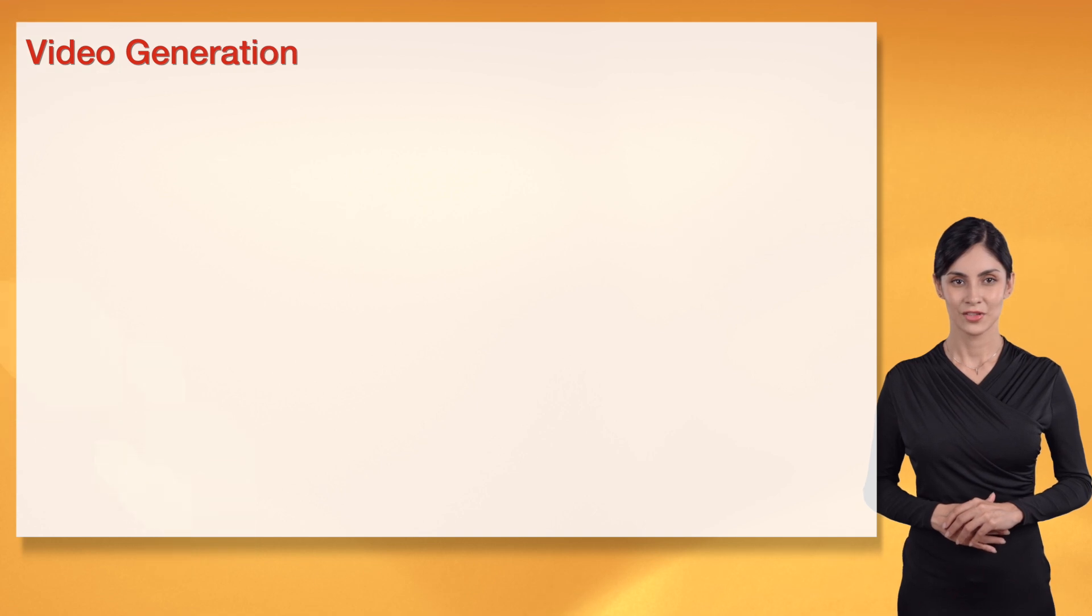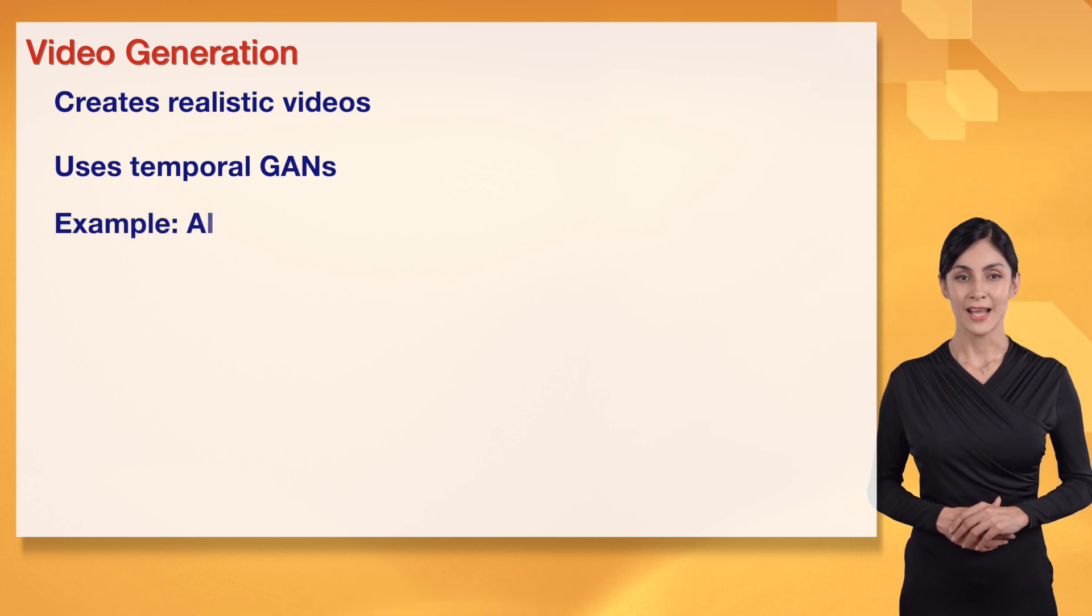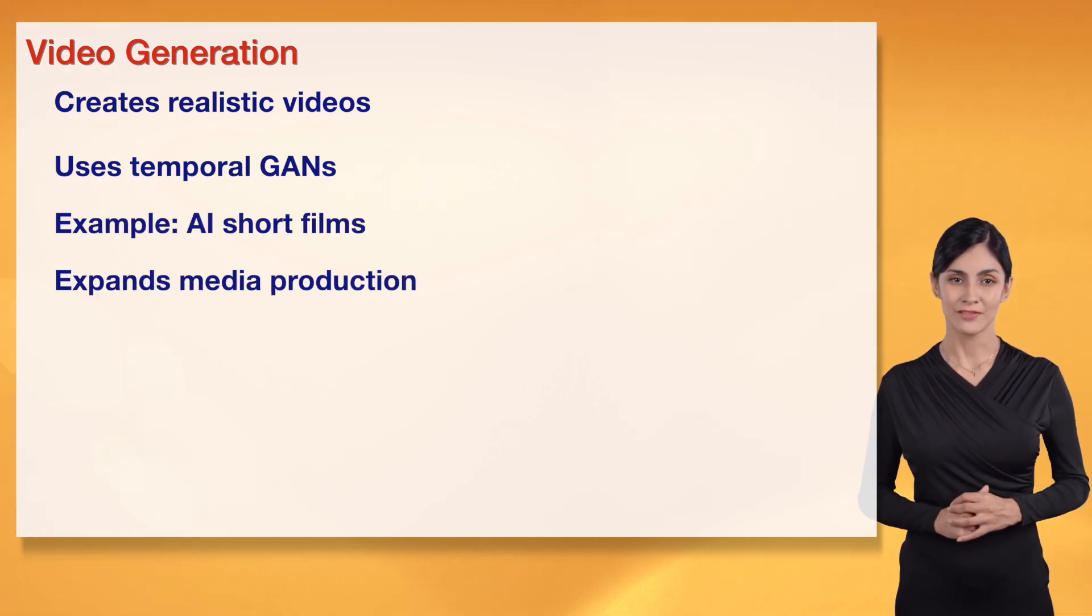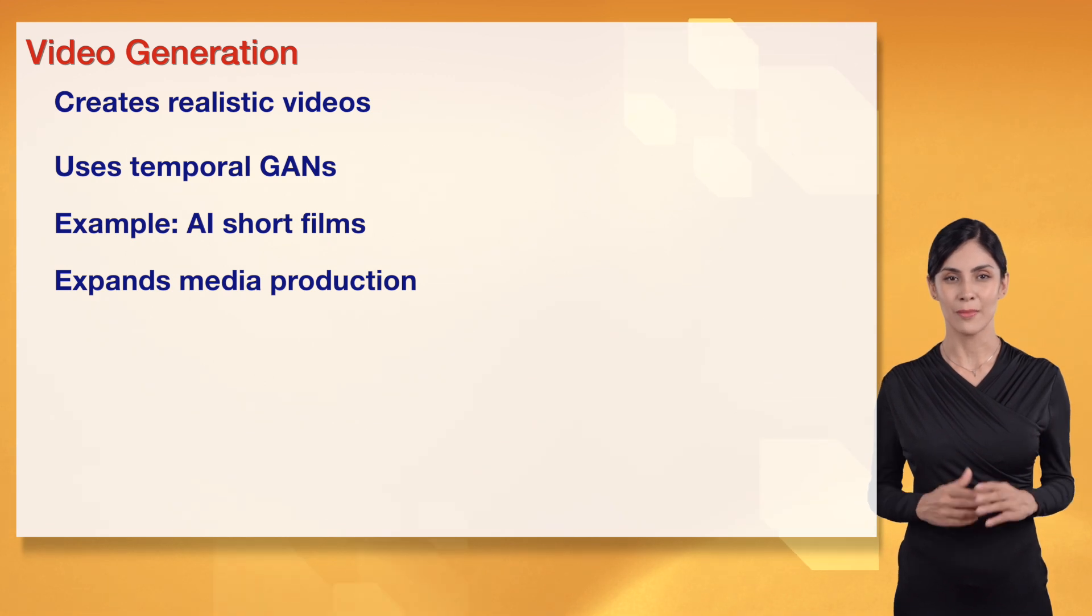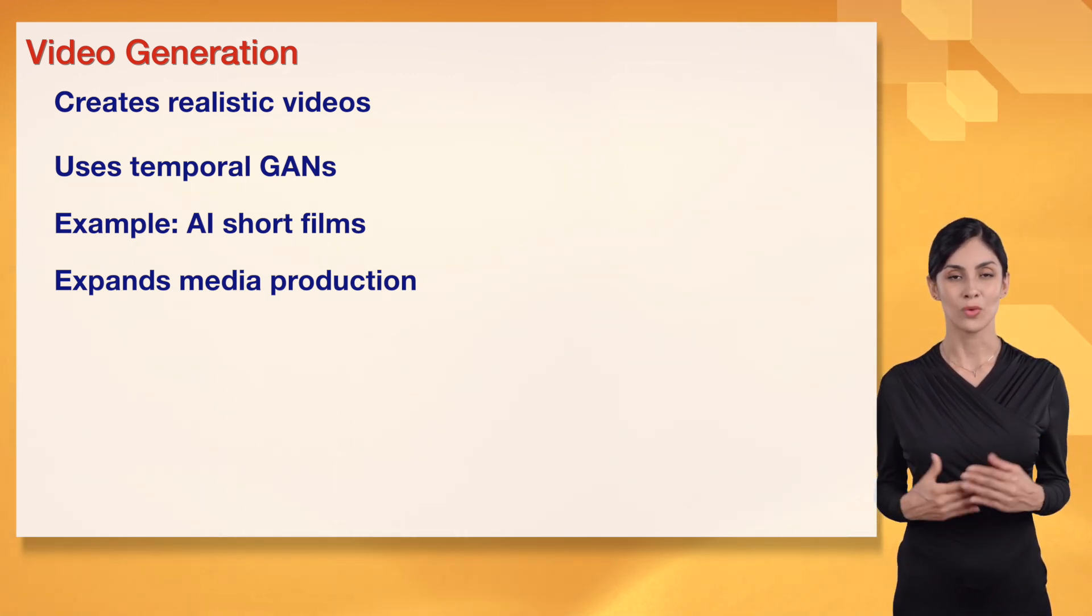GANs in video generation are cinematic. They create realistic videos using temporal GANs, like AI short films, expanding media production. This is filmic AI magic. I'm excited to explore it. Let's make videos. This transforms media.